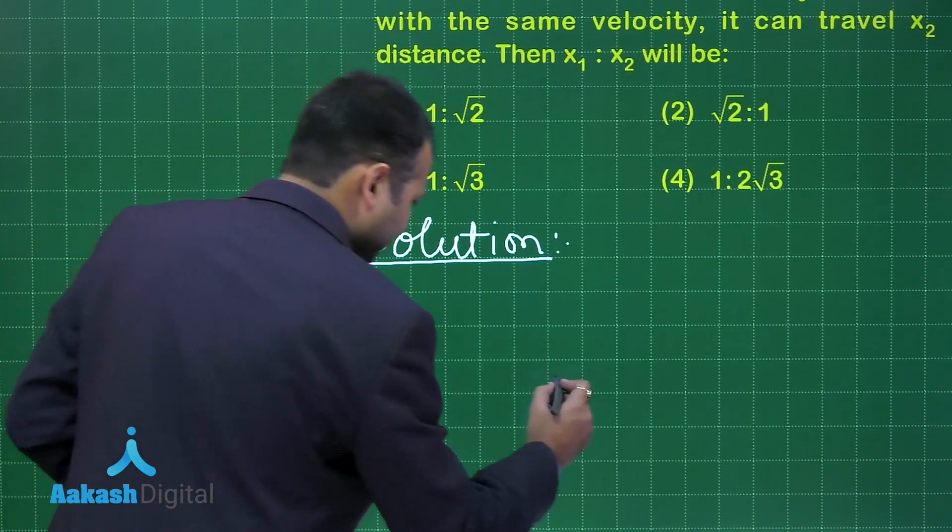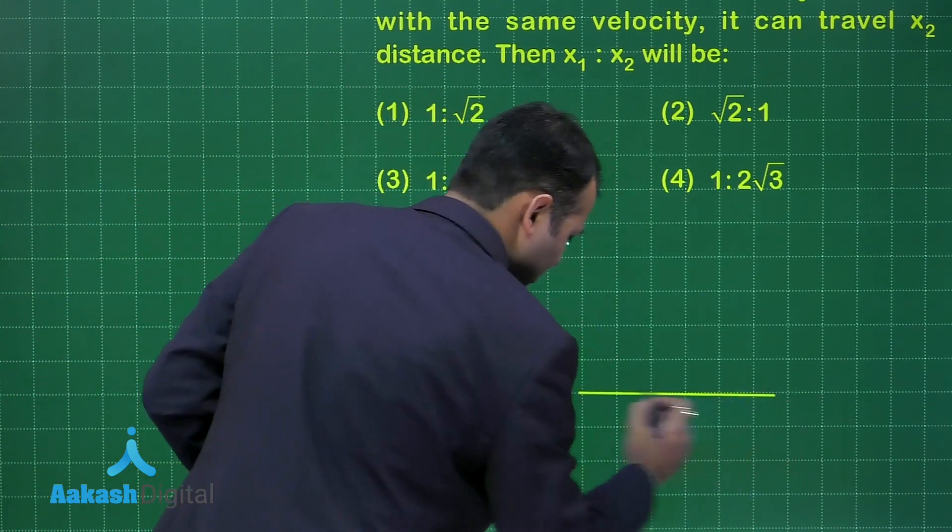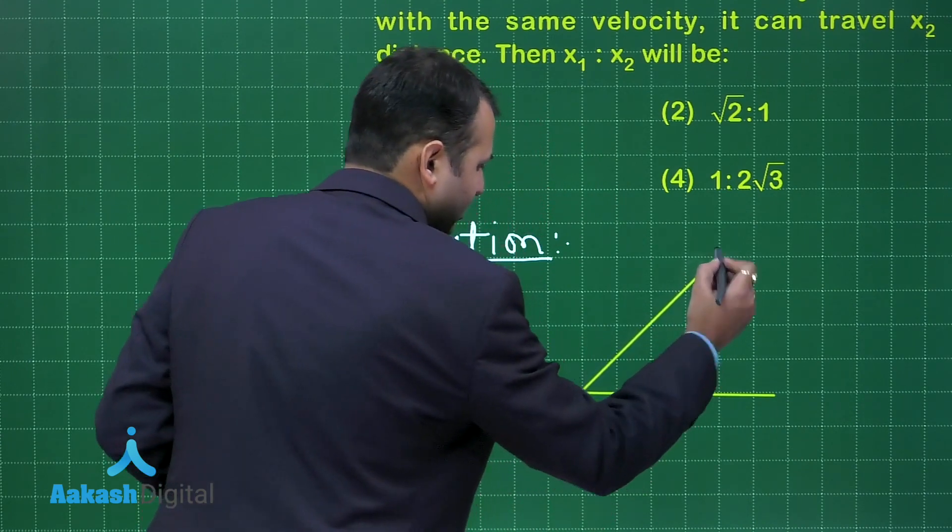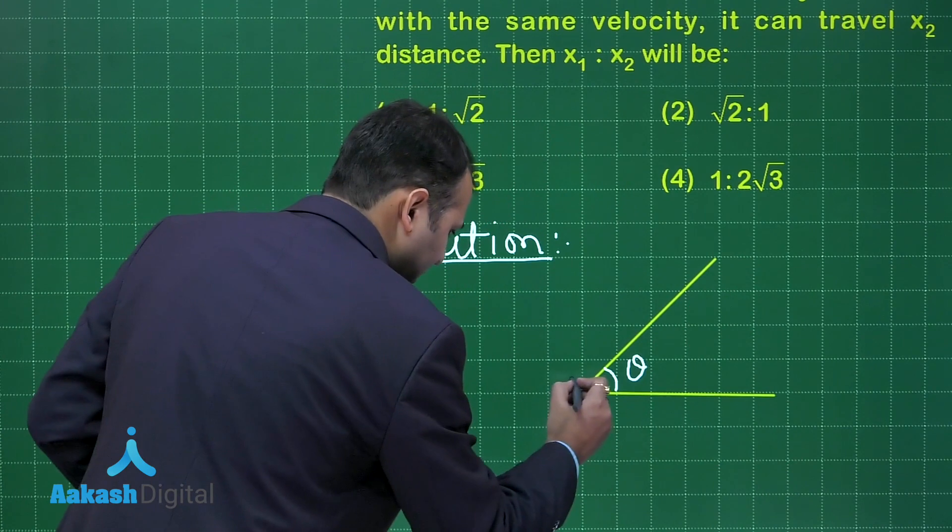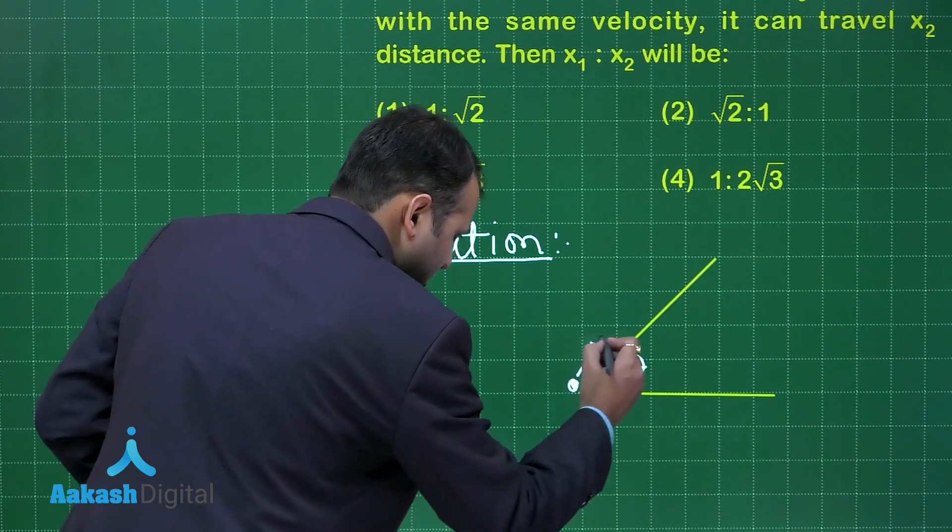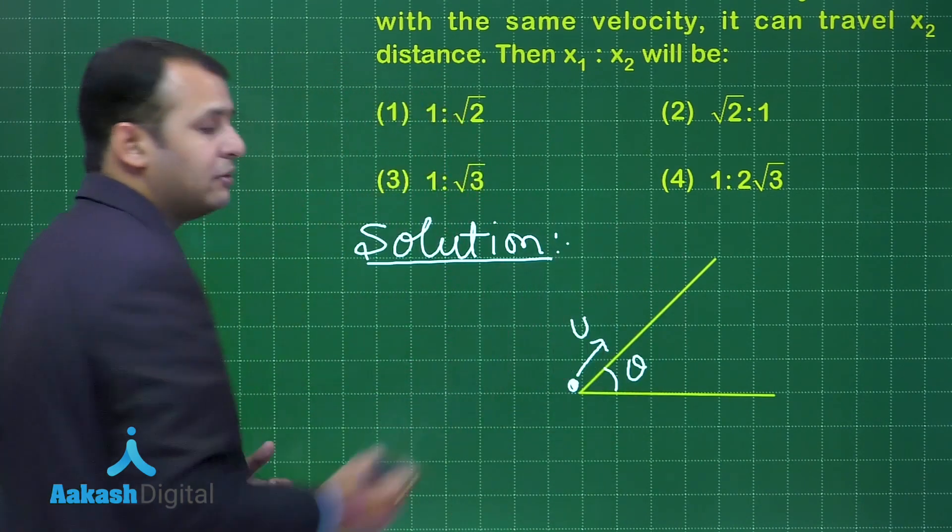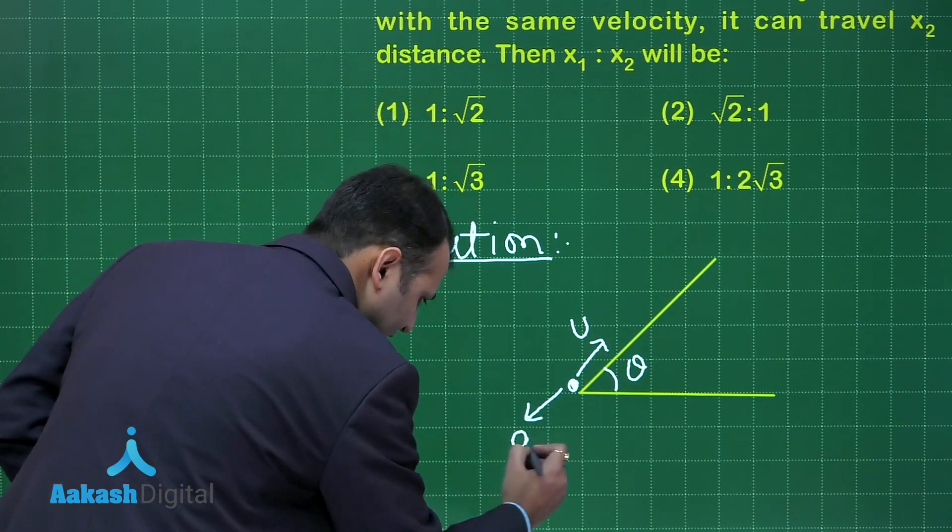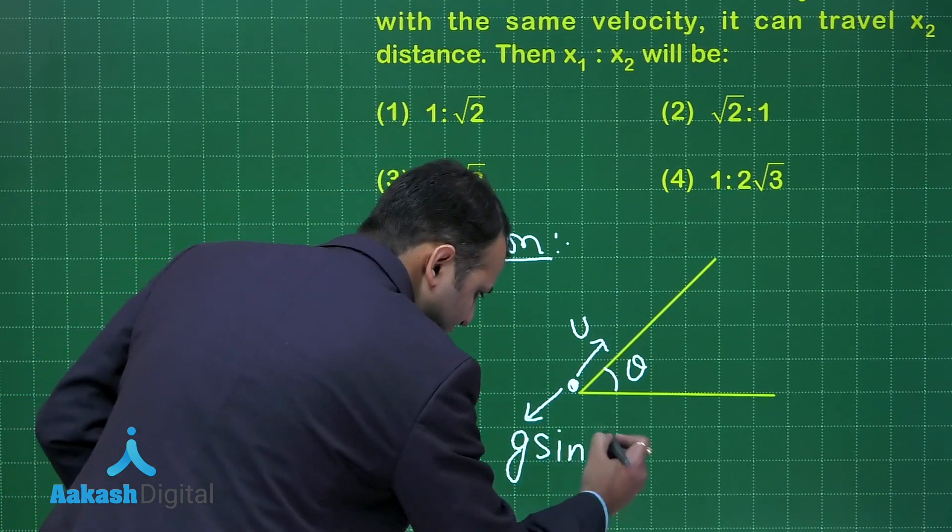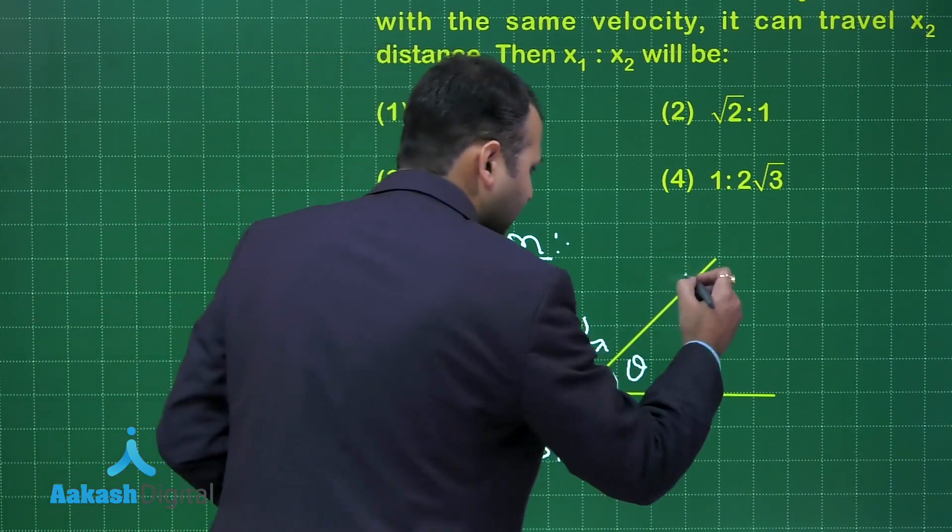So let's have a diagram. This is the base horizontal and this is the inclined plane at some angle θ. The particle is kept here and it is shot like this along the inclined plane. In this case the acceleration due to gravity will be acting downwards. This will cause retardation and finally this object will come to rest at this point.